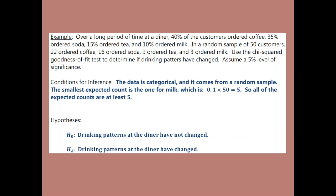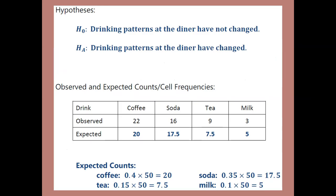The null hypothesis is that the model fits — that the drinking patterns have not changed, so that historical 40/35/15/10 model still works. The alternative is that the model no longer works — that drinking patterns have changed. To fill in the expected counts, you use those percentages and multiply by 50, the sample size. So 40% of 50 is 0.4 times 50, which is 20. The model said 35% ordered soda, so 0.35 times 50 is 17.5, and so forth. That's how you get those four expected counts.